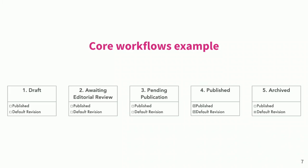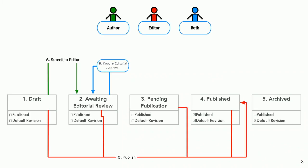Let's enable a few transitions to see how content moves through a workflow. The first of four things to understand about transitions is that each transition has a permission, so they can be assigned to different roles. Out of the box, content moderation lets you control who can use an action based on what role they have. For systems I've built, usually that hasn't been enough and we need to alter those access permissions. We've got three transitions: submit to editor, which can be used by the author; publish, which can be used by the editor; and keep in editorial approval, which can be used by both.